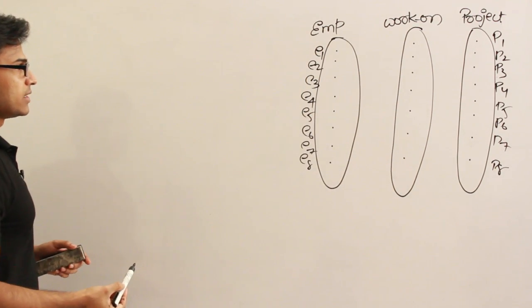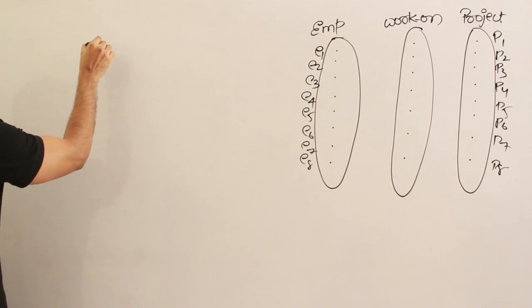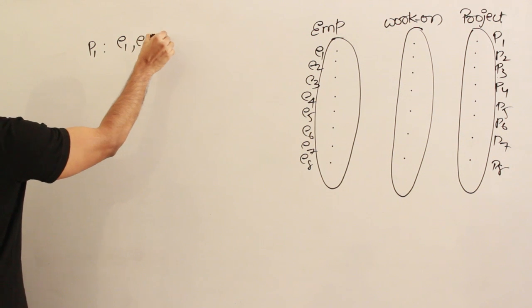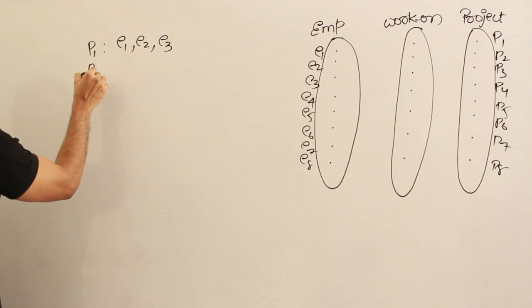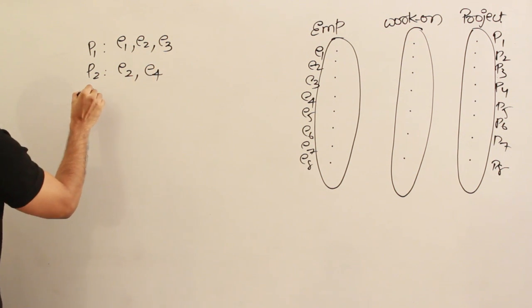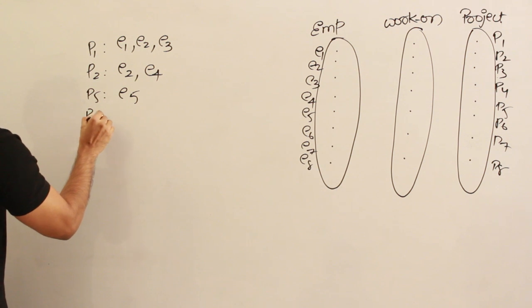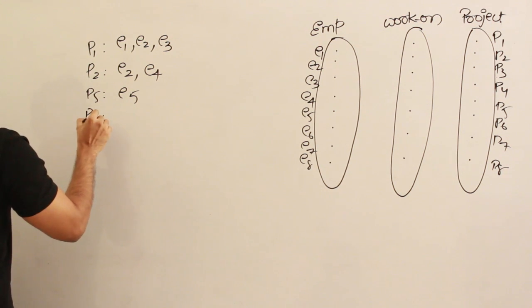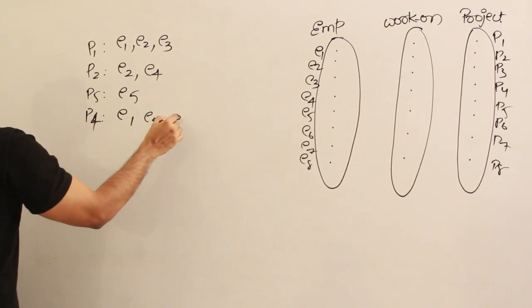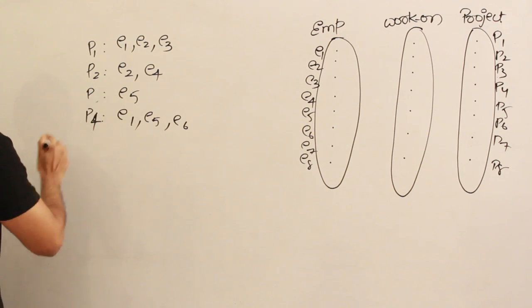Assume that the working relationships are as follows: Project P1 has employees E1, E2, and E3 working on it. Project P2 has employees E2 and E4 working on it. Project P5 has employee E5 working on it. And P3 and P4 have employees E1, E5, and E6 working on them.